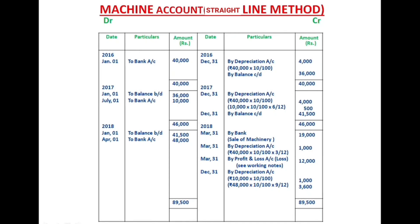On the credit side for December 31st, we have: sale proceeds Rs.19,000, depreciation Rs.1,000, loss Rs.12,000, depreciation Rs.1,000, depreciation Rs.3,600, and the closing balance carried down is Rs.52,900.